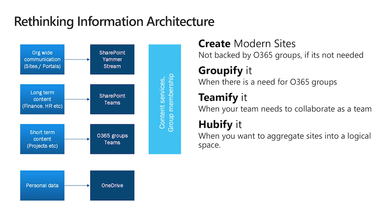Rethink the information architecture — don't recreate the old object store or library structure. Where there is personal data, use OneDrive. Where there is short-term content like a project, use Teams or Office 365 groups. Where you have more long-term content like an HR site or accounts site, use SharePoint. For organization-wide content like course sites, portals, and intranets, use SharePoint with Yammer and Stream. Stream is particularly good for tutorials or general communication.